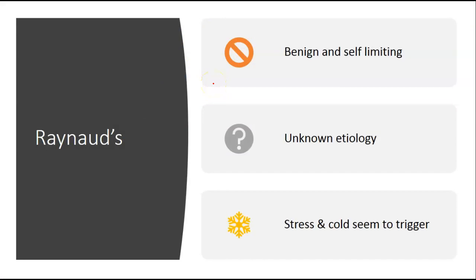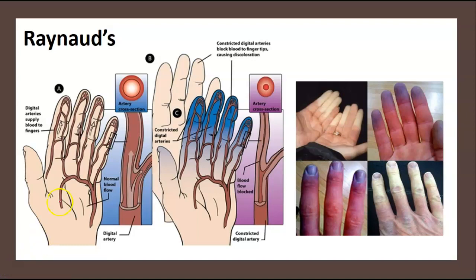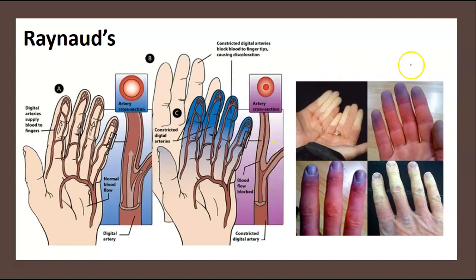Another arterial condition: Raynaud's disease is benign and self-limiting. They really don't know its etiology, but stress and cold seem to trigger it. The digital arteries supply blood to the fingers. When stress or cold occurs, there is constriction of the digital arteries that blocks blood flow to the fingertips, causing discoloration. So blood flow becomes blocked because of the constricted digital arteries.